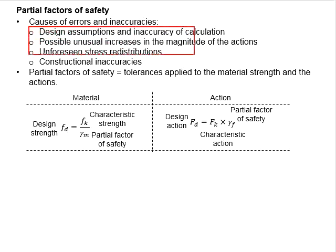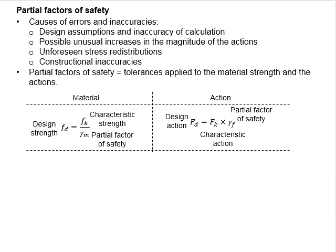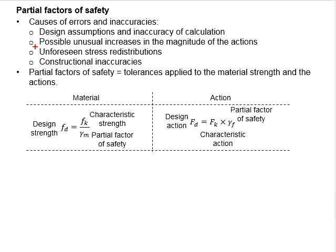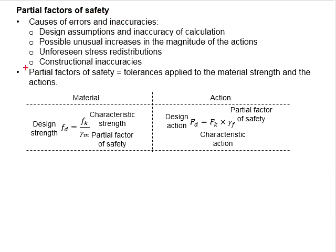These are some causes of error and inaccuracy, which include design assumptions and inaccuracy of calculations, possible unusual increases in the magnitude of the actions, unforeseen stress redistribution, and constructional inaccuracy. To cater for the error and inaccuracy, partial factors of safety are being used.